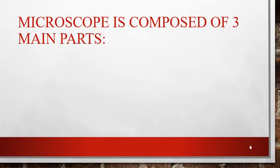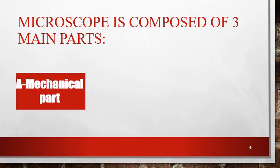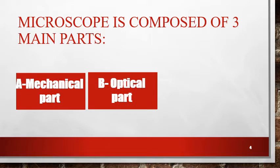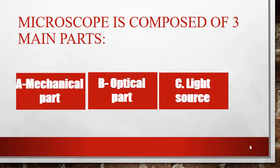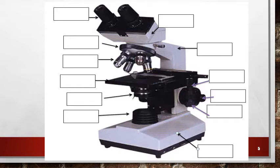Light microscope is composed of three main parts: mechanical part, optical part, and light source. The mechanical part consists of the body of the microscope, which represents the main part or backbone on which the other parts are settled.